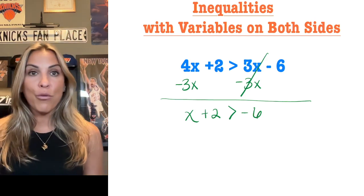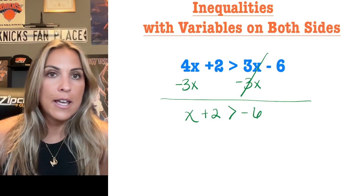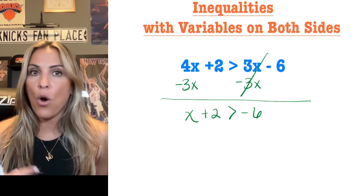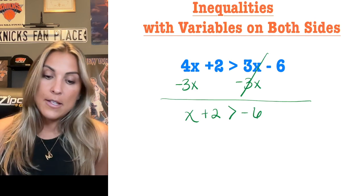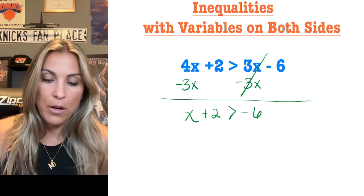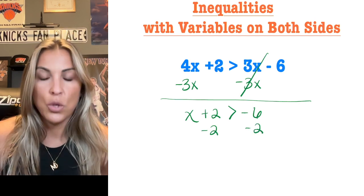So now I've got the variable on one side. I just don't have it isolated yet. So just like in an equation, once you get it to one side, now you're trying to get rid of all the other numbers that are around it. And in this case, we only have one other number that's around it, which is that positive 2. So to get rid of it, we're going to do the inverse operation, which is minus 2 minus 2.